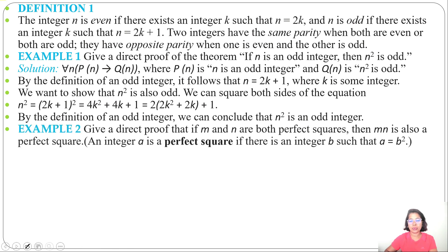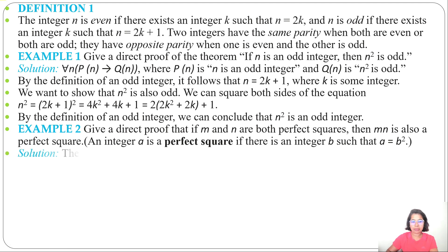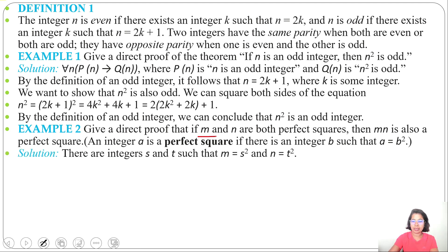Example 2: Give a direct proof that if m and n are both perfect squares, then m times n is also a perfect square. An integer a is a perfect square if there is an integer b such that a equals b squared — for instance, 4 equals 2 times 2, and 9 equals 3 times 3. Let m equal s squared and n equal t squared, since m and n are both perfect squares. That is our P, and we need to prove that m times n is also a perfect square — that is our Q.